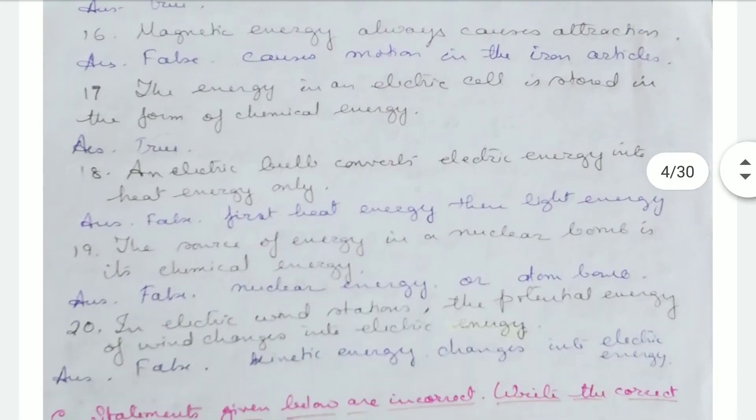An electric bulb converts electrical energy into heat energy only — that's false. It first converts electrical energy to heat and then into light, so two forms of energy are produced.